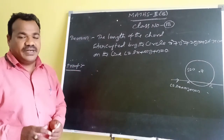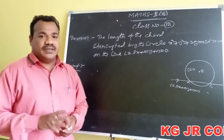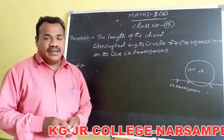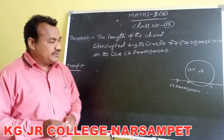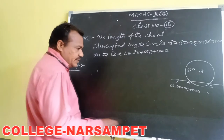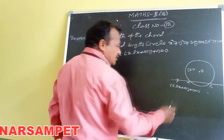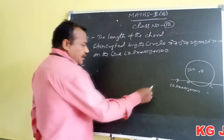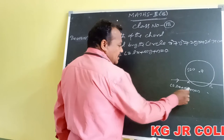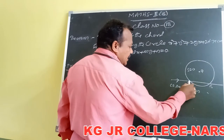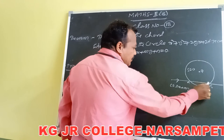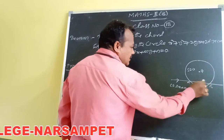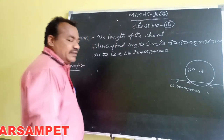We have to find the length of the chord intercepted by the circle upon the line lx + my + n = 0. This is the circle s = 0, and its center coordinates are (-g, -f). The line lx + my + n cuts the circle at two points A and P. The distance between A and P is the length of the chord — AB is the chord.